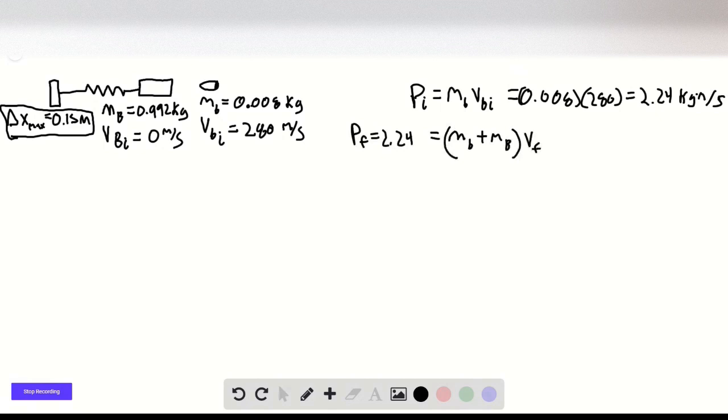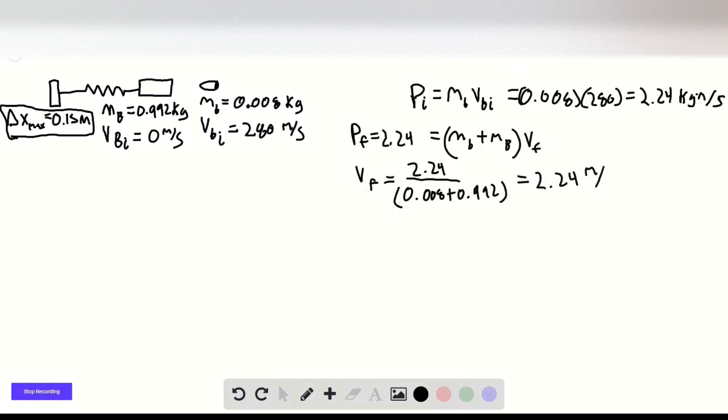So if I rearrange this and solve for v final, 2.24 divided by the sum of the masses, 0.008 plus 0.992 is 1 kilogram. So our final velocity is 2.24 meters per second.